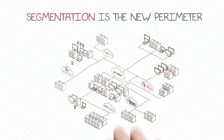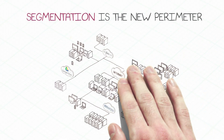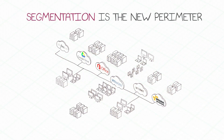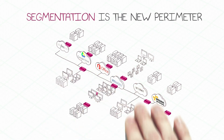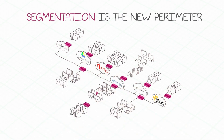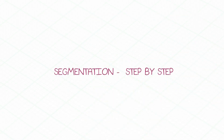By dividing a complex environment into small segments based on security profiles, and deploying an enforcement point at the boundary of each segment, the environment is secure. Segmenting a network takes four simple steps.